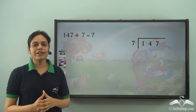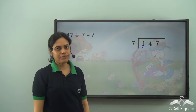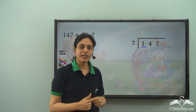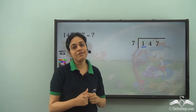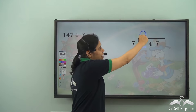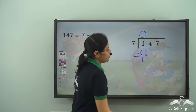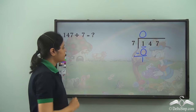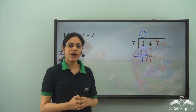Now what is 147 divided by 7? Once again I first consider the first digit which is 1. How many times does 7 go into 1? Not even once — 7 into 1 is 7, but 1 is much less than 7. So I write a 0 above 1. 0 into 7 is 0, and I subtract to get 1. Now I bring this 4 down to get 14.